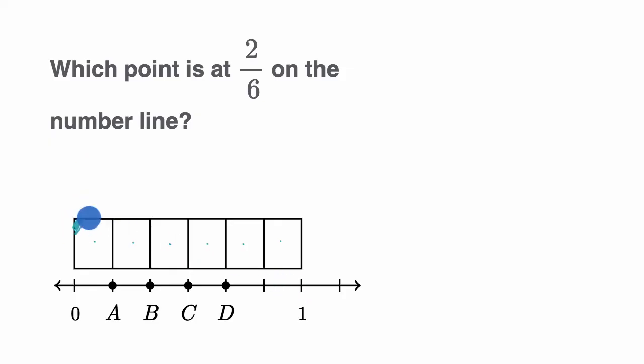Two-sixths is, so that's one-sixth right over there, and then that is two-sixths. And so you could see on the number line, the thing that gets us two-sixths of the way to one is at point B. It corresponds to how much